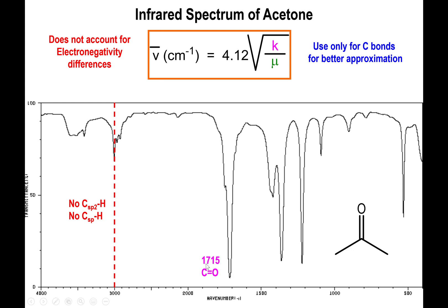This shows up at about 1700 — 1715 in this case — and this peak is a very strong peak. It's semi-broad, but mostly sharp. The thing to be really attentive about is how strong the peak is; it goes almost all the way to the x-axis. This is very indicative of carbonyl bonds being present, and it won't be exclusive to ketones. Anything that contains a carbonyl will have a strong peak nearby the 1700 region.